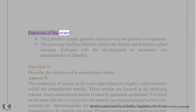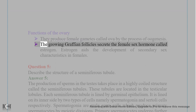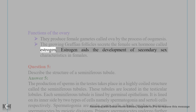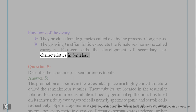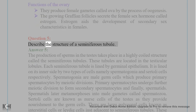Functions of the ovary: they produce female gametes called ova by the process of oogenesis. The growing Graafian follicles secrete the female sex hormone called estrogen. Estrogen aids the development of secondary sex characteristics in females.